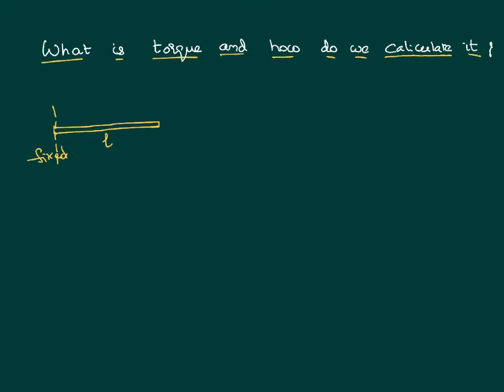If you want to turn this body, we have to apply a force. If you apply a force at the far end, the body starts turning easily. However, if you apply the same force closer to the fixed end, it becomes more difficult for the body to turn. Applying it even closer makes rotation even harder.